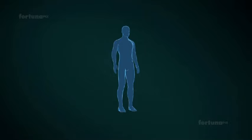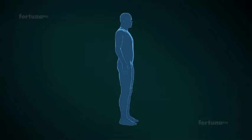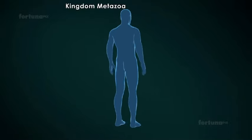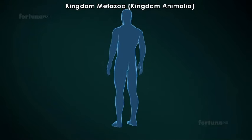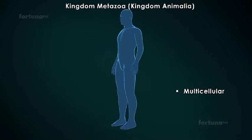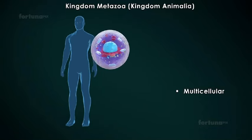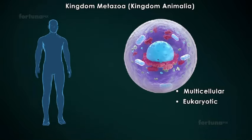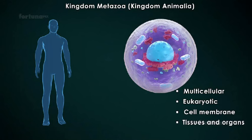Finally, we reach the kingdom with the most complex organisms, Kingdom Metazoa, or Kingdom Animalia. It includes animals, which are multicellular organisms. The cells of these organisms will be eukaryotic, and although they do not have a cell wall, they do have a cell membrane. All members of this kingdom have tissues and organs. Animals are heterotrophic, meaning they depend on other living things for food.